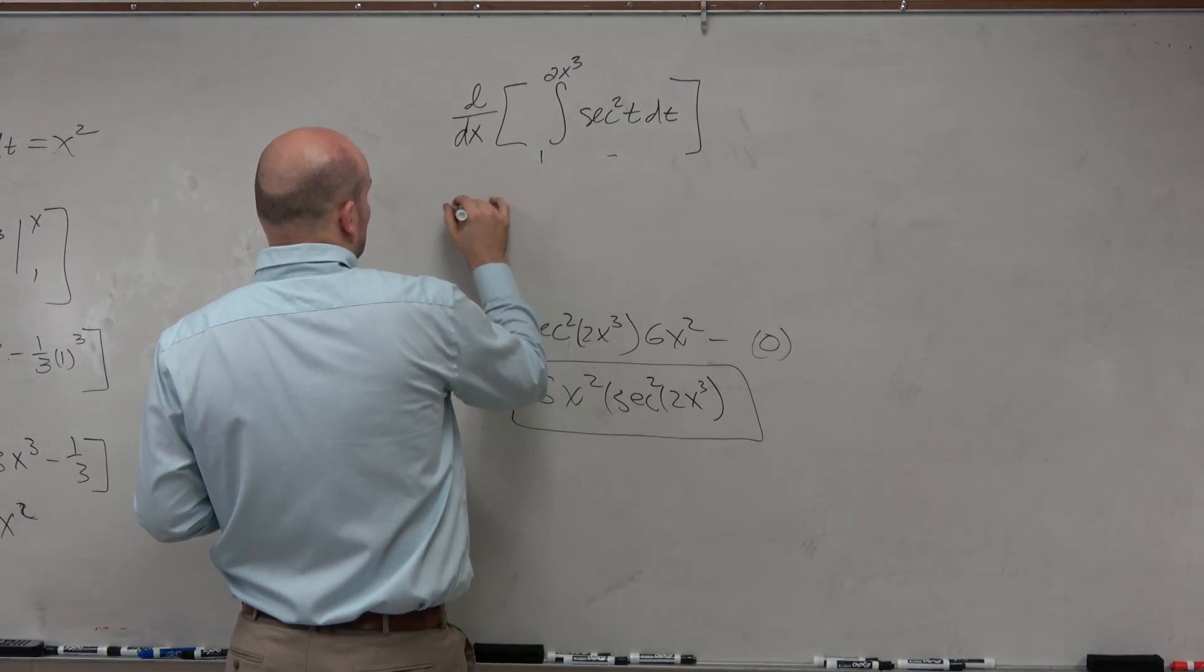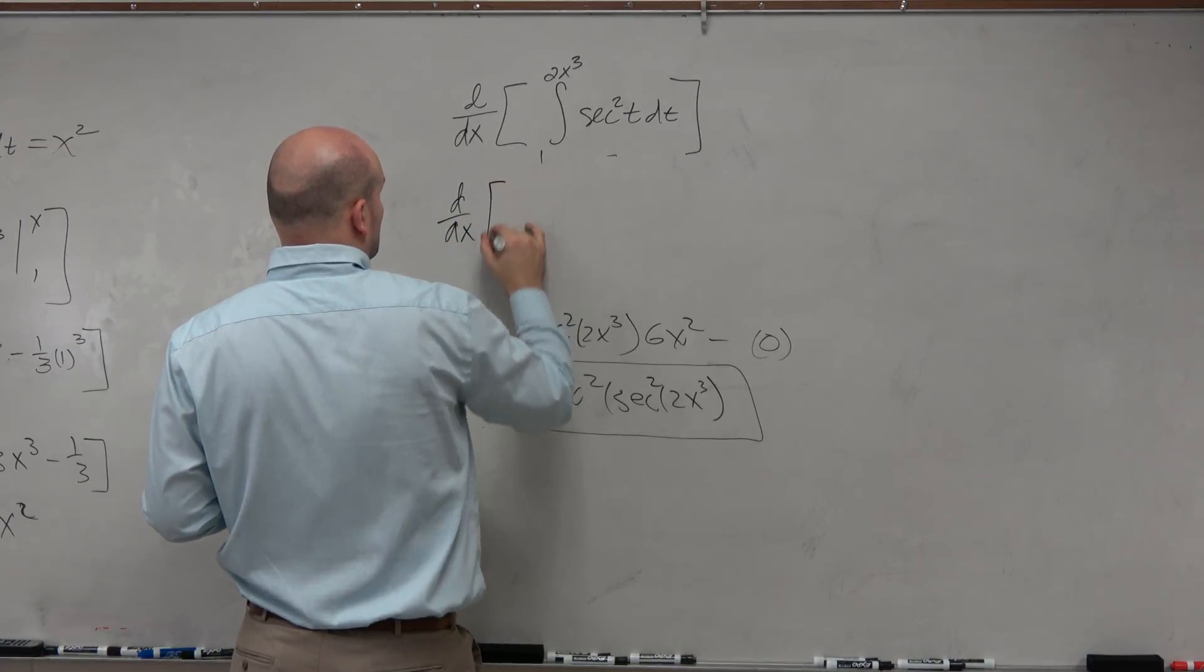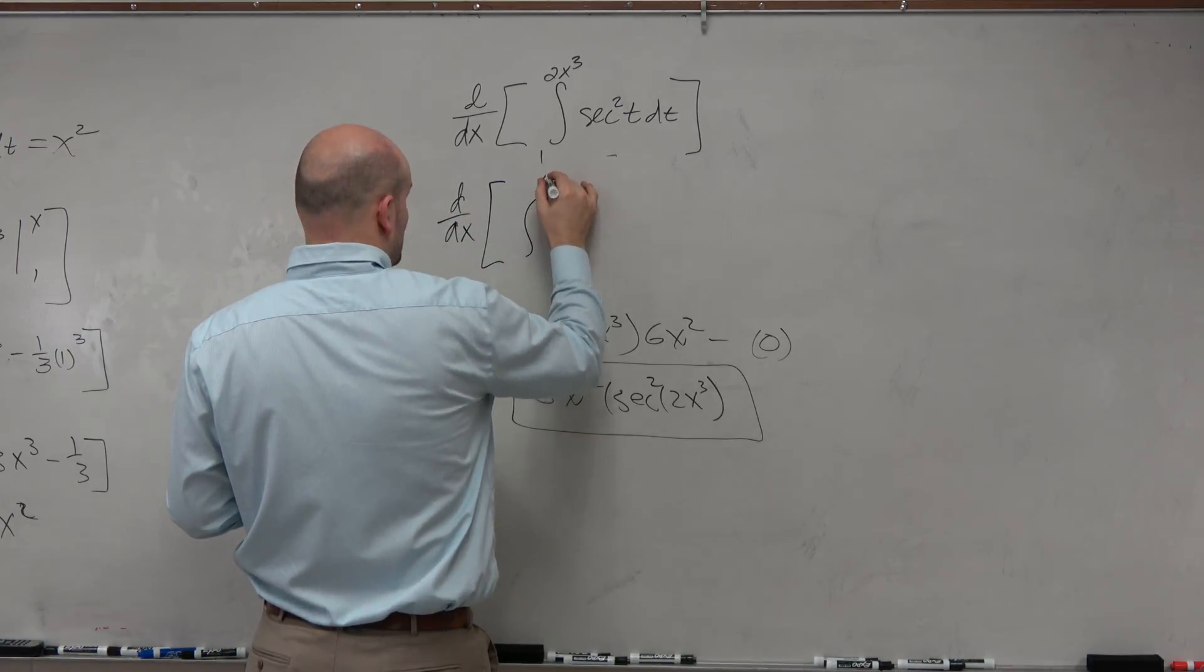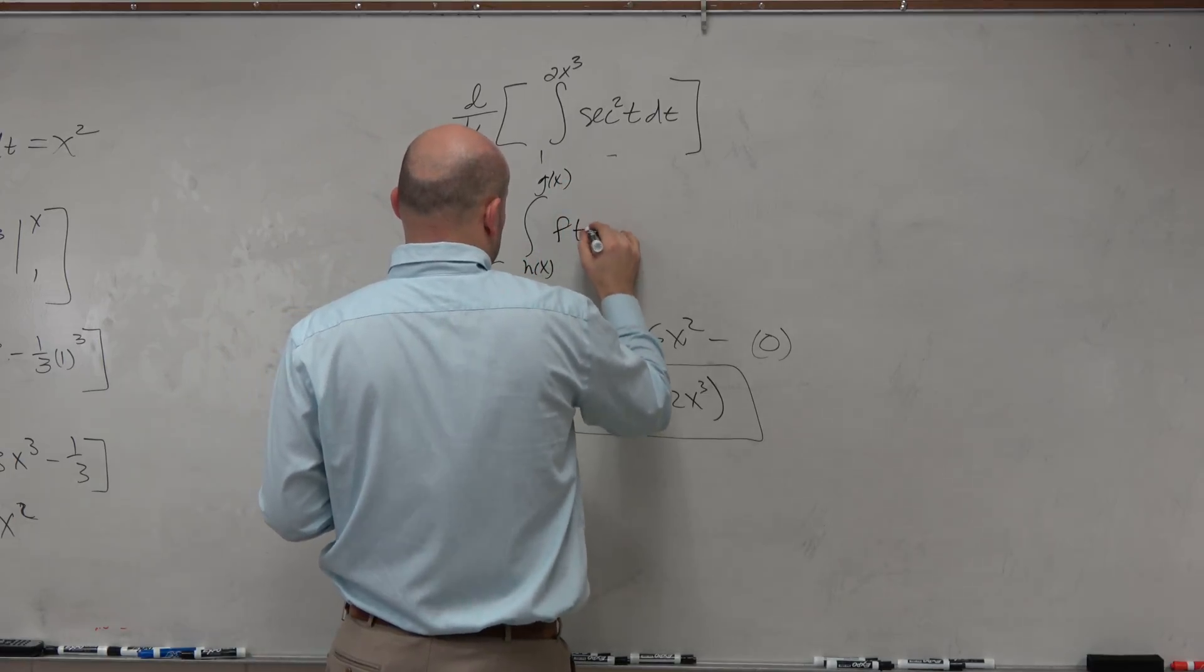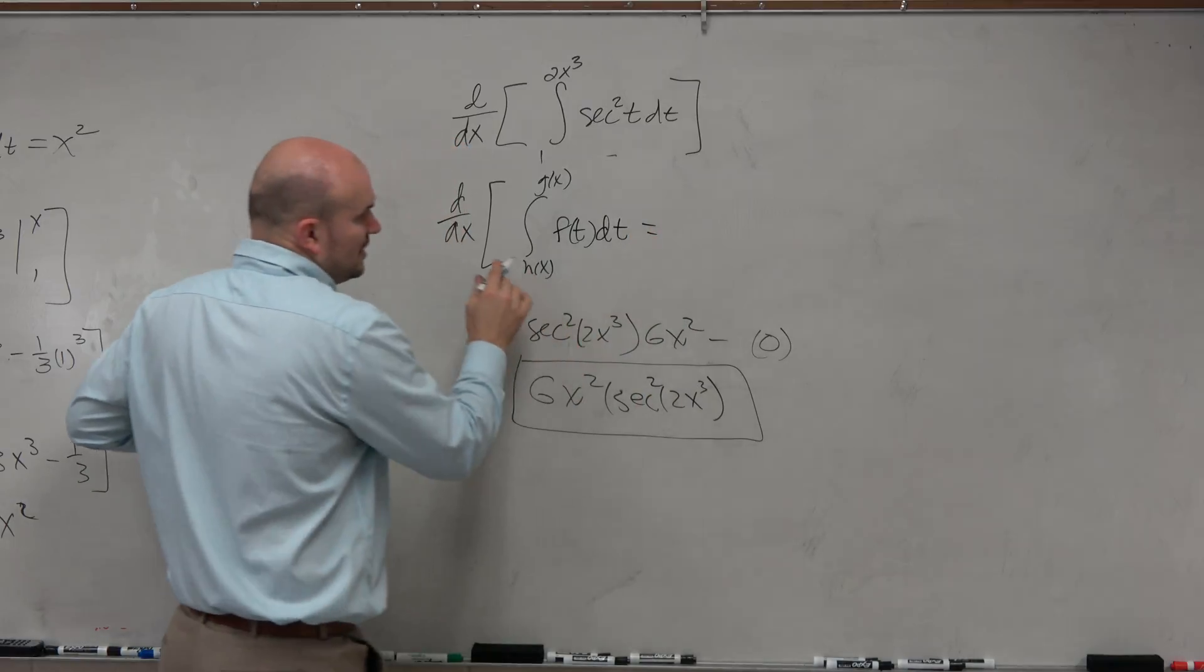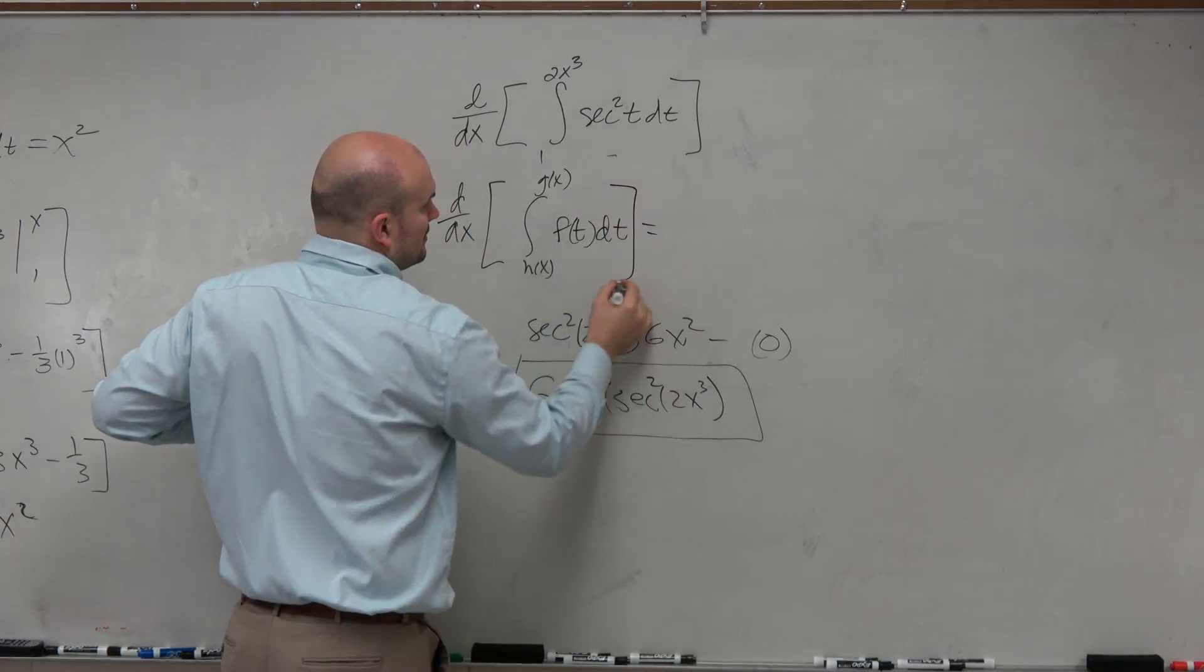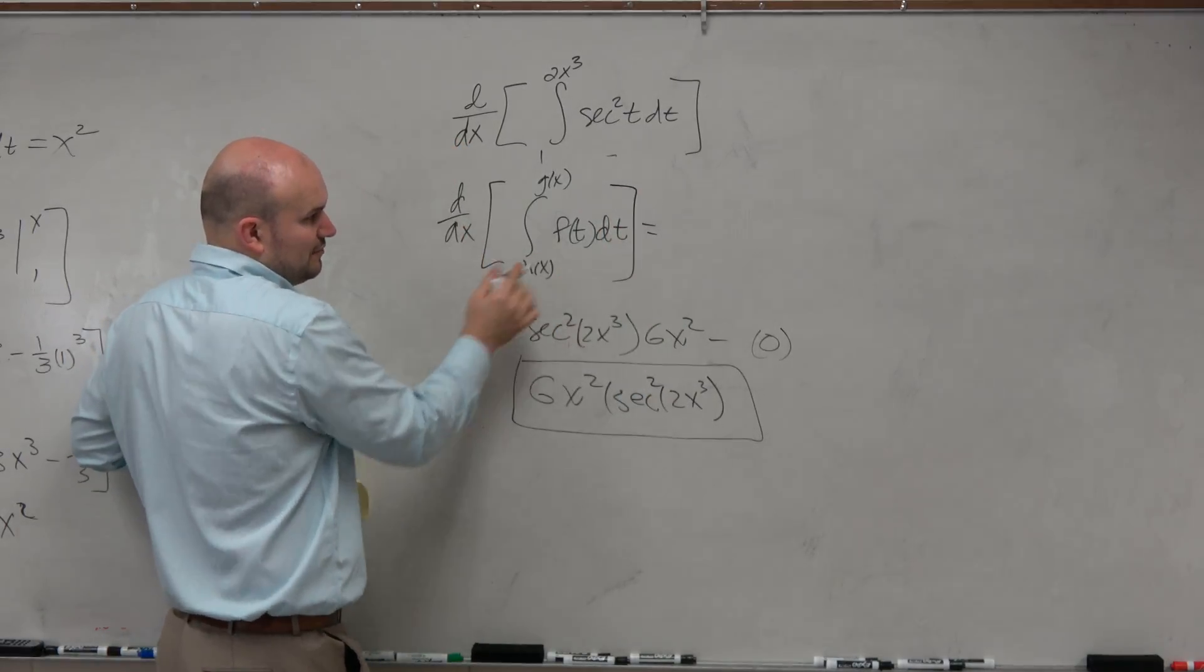So another way to do this exact same problem is, let me just make sure I have that written. If we have d over dx of an integral from g of x to h of x of f of t dt.